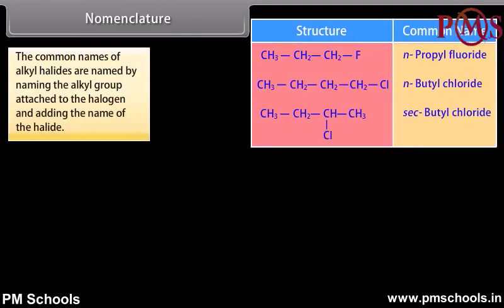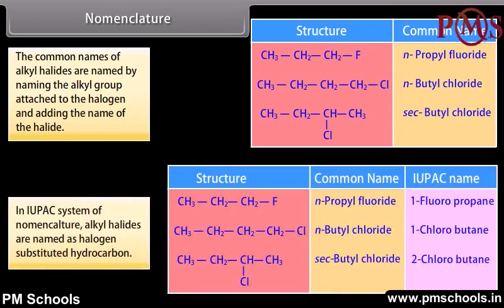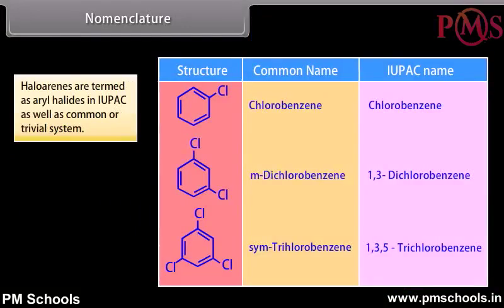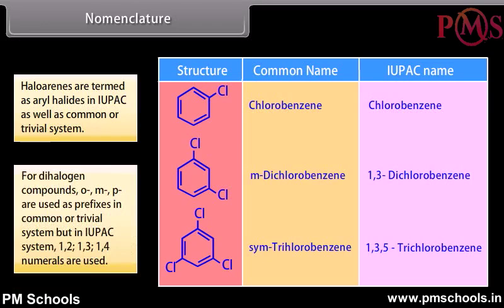The common names of alkyl halides are formed by naming the alkyl group attached to the halogen and adding the name of the halide. In the IUPAC system of nomenclature, alkyl halides are named as halogen-substituted hydrocarbons. Haloarenes are termed as aryl halides in both IUPAC and common or trivial systems. For dihalogen compounds, ortho and meta-para are used as prefixes in the common system, but in the IUPAC system, 1-2, 1-3, and 1-4 numerals are used.